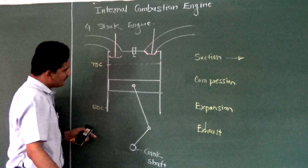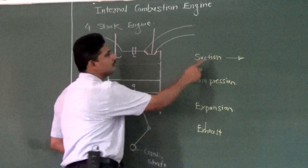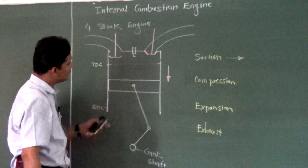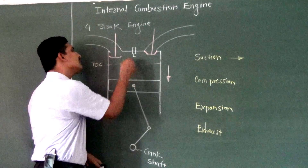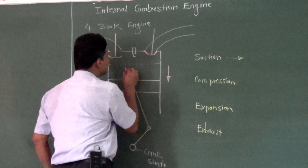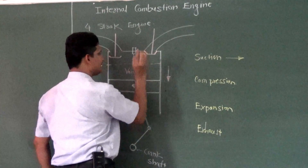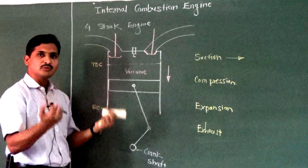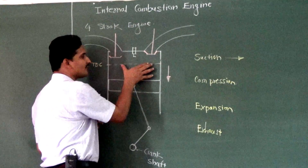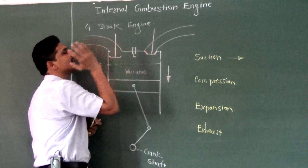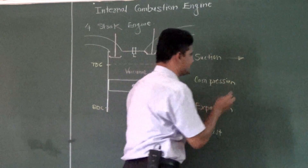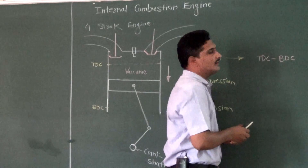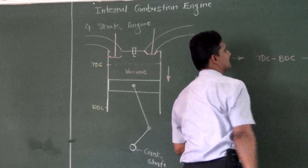Before starting the suction stroke, the piston is at TDC. When we start the suction stroke, the piston starts moving in the downward direction. As the piston moves downward, the volume above the piston increases, and what is generated is called a vacuum. Vacuum is pressure below the atmosphere — we know atmospheric pressure is 1.01325 bar, so if pressure goes below this, it is vacuum. Vacuum is generated because the piston is moving from TDC towards BDC.